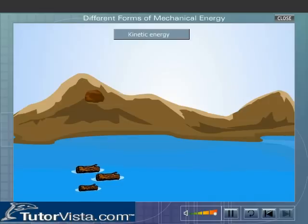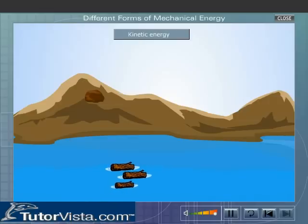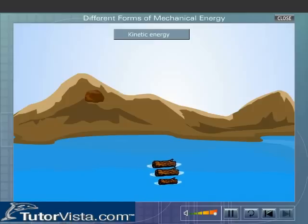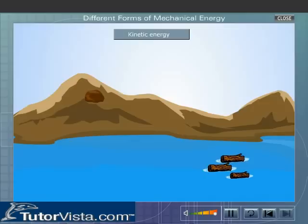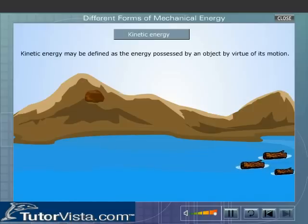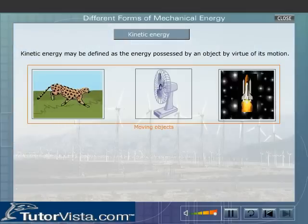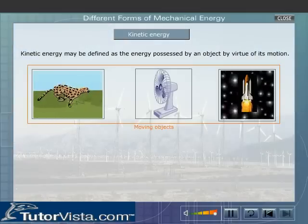Kinetic Energy. We know that logs are pushed into the river and are carried from one place to another by the moving water. This shows that the moving water is able to do work as it possesses energy. This type of energy possessed by an object by virtue of its motion is called Kinetic Energy. Thus, Kinetic Energy may be defined as the energy possessed by an object by virtue of its motion. All moving objects possess kinetic energy.